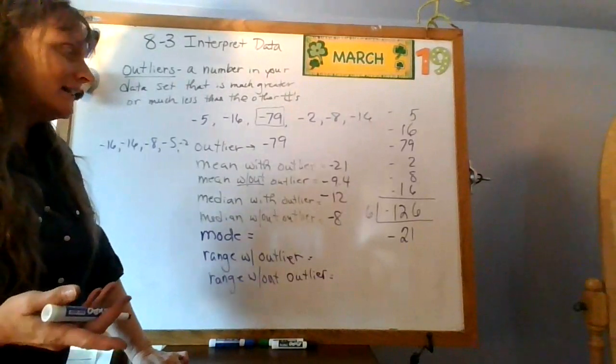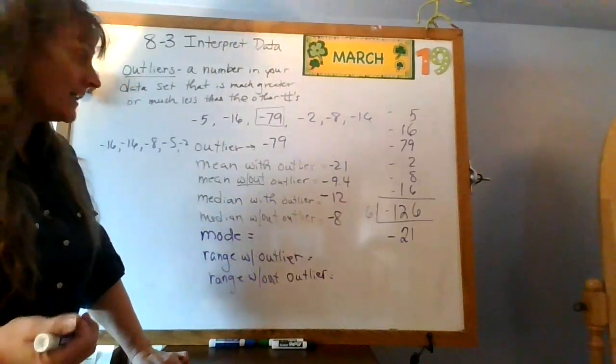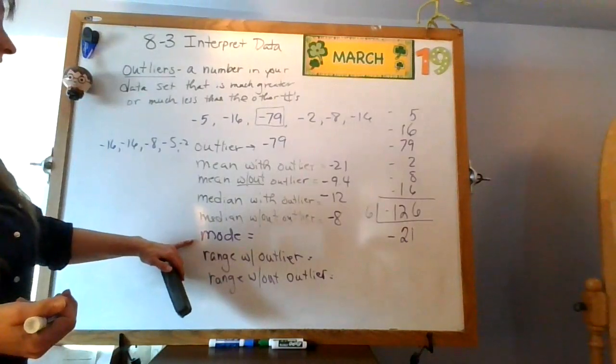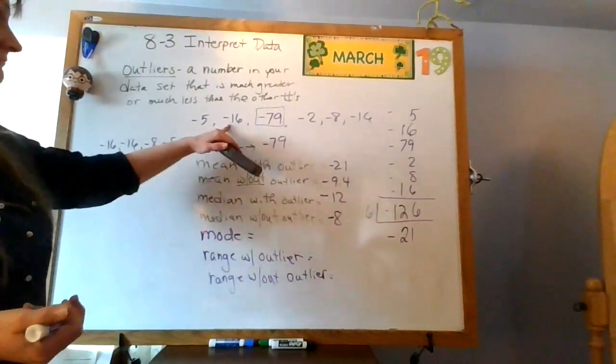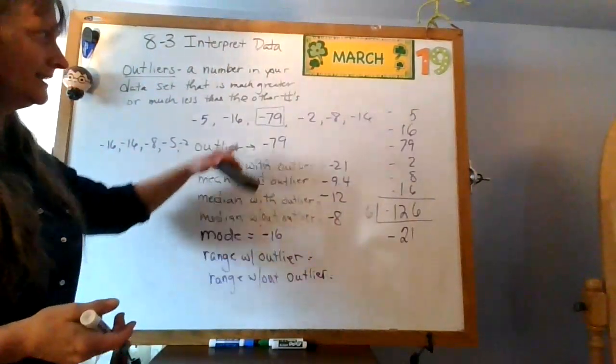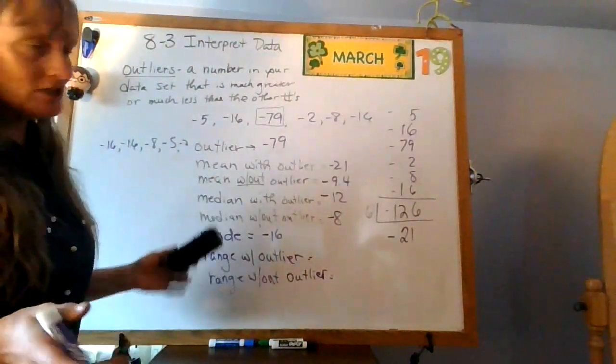So this time, it affected it. I mean, not a ton ton, but it did affect it this time. What about mode? What is the mode with the outlier? Looks like negative 16 to me. What's the mode without the outlier? Negative 16.